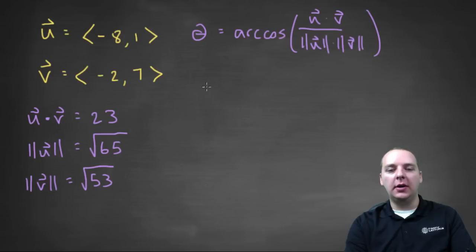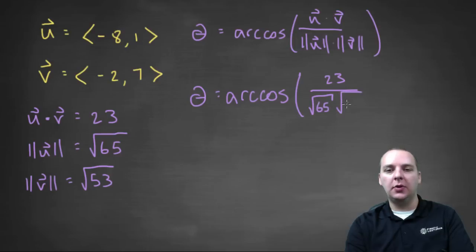Alright, so we have our major quantities here, and so theta, so we get out our calculator now, would be the arc cosine of whatever twenty-three divided by the square root of sixty-five times the square root of fifty-three is. So we just calculator punch all that, be careful with your parenthesis and things like that. I'm going to save us a little bit of time, I actually did this earlier, and I got, out of my calculator, sixty-six point nine degrees.